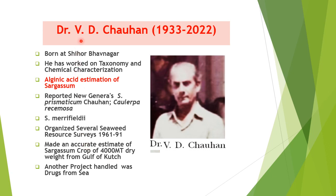V.D. Chauhan (1933–2022), born at Bhavnagar, worked on taxonomy and chemical characterization of alginic acid, estimation of Sargassum, and reported new genera of Sargassum. He organized several seaweed resource surveys from 1961 to 1991 and made an accurate estimate of a Sargassum crop of 4,000 metric tons dry weight from the Gulf of Kutch. He also handled a project on drugs from the sea and is known for the chemical characterization of many products with industrial and pharmaceutical uses.